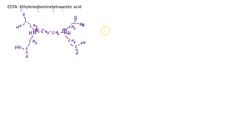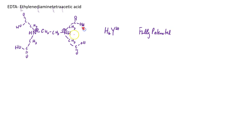So what we have here is the fully protonated form of EDTA. We can think of it as H6A, but when we talk about EDTA we use the symbol Y. H6Y would have a plus two charge, coming from these fully protonated nitrogen atoms. This is the fully protonated form of EDTA — it's a hexaprotic weak acid capable of donating six protons.